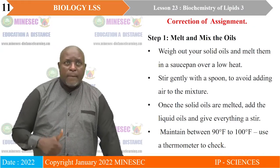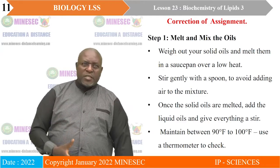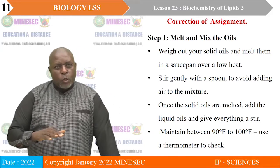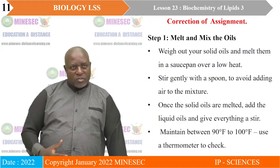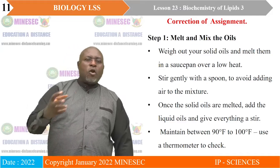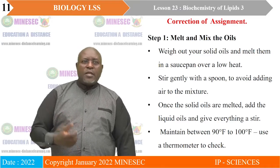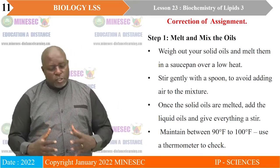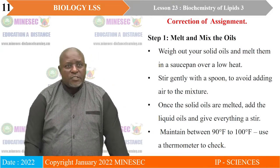Step one: melt and mix the oils. If the oil was solid, put it in a saucepan and melt it over low heat. Wear your solid oils and melt them, stirring so that air bubbles can get out. Once the solid is melted, add the liquid oil to it and stir again so that air gets out. Make sure you use a thermometer to maintain a temperature of 90 degrees Fahrenheit. It's very important to check the temperature.